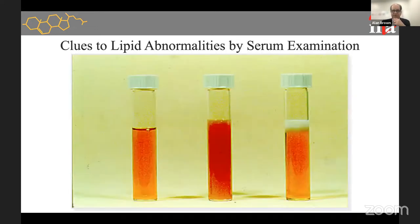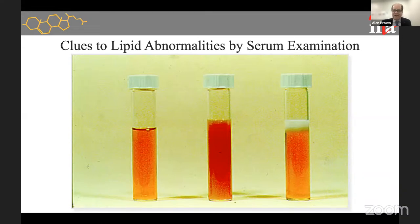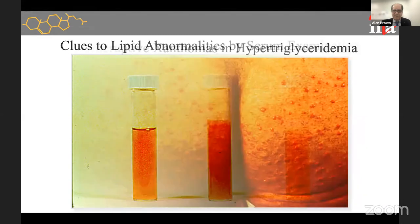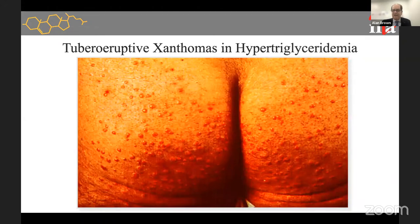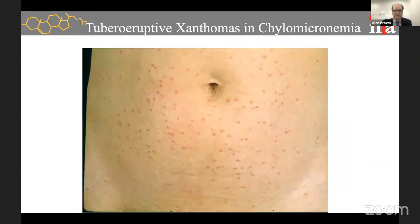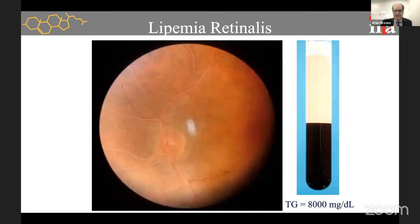High triglycerides due to any cause can produce tubero-eruptive xanthomas — they look like pimples but contain triglycerides — occurring on the abdomen, rear end, or elbows. You can also get lipemia retinalis with a creamy pink color of blood vessels in the eyes due to triglyceride deposition in the retinal arteries. Chylomicronemia occurs because chylomicrons are broken down by lipoprotein lipase in the endothelium. If you inherit a bad gene for lipoprotein lipase — a recessive disorder — you can't break down chylomicrons and they build up in the blood.